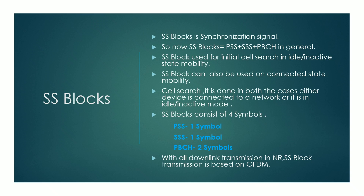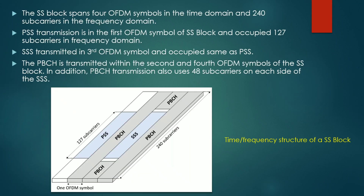All downlink transmission including SS block transmission is based on OFDM. We can see the figure of the time-frequency structure of the SS block — how exactly it looks and how the positioning of PSS, PBCH, and SSS are in the frequency and time domain. The SS block spans four OFDM symbols in the time domain and 240 subcarriers in the frequency domain.